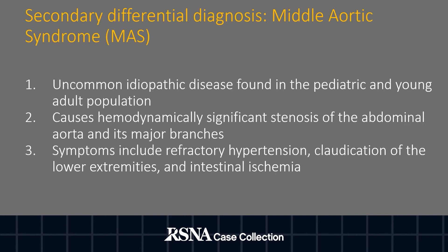An additional differential diagnosis is Middle Aortic Syndrome, or MAS. MAS is an uncommon idiopathic disease found in the pediatric and young adult population. It causes hemodynamically significant stenosis of the abdominal aorta and its major branches. Depending on the level and branches affected, symptoms can include refractory hypertension, claudication, or even intestinal ischemia. Middle Aortic Syndrome can be differentiated from this case because of the involvement of the thoracic aorta — MAS would not demonstrate wall thickening above the level of the celiac artery as seen in this case.